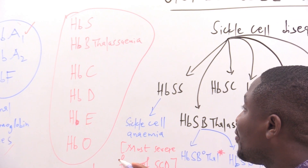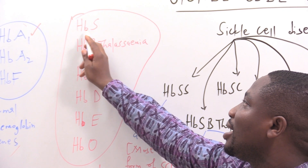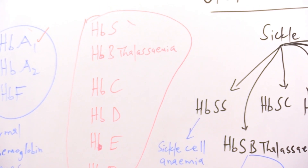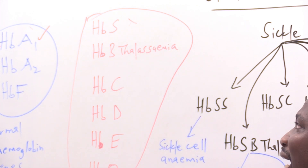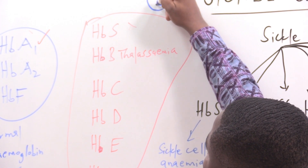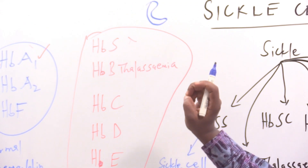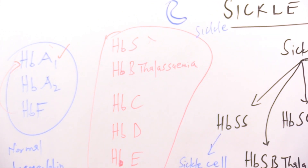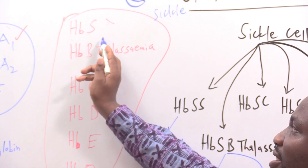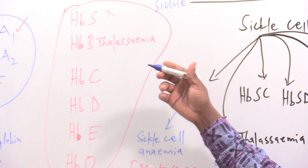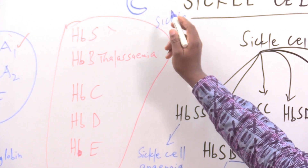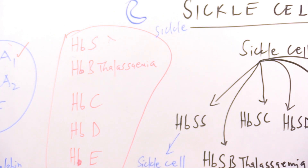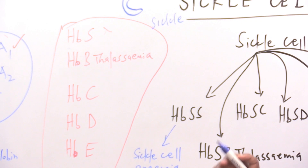For abnormal hemoglobin, we have the HbS gene, which codes for an abnormal hemoglobin. When HbS codes the hemoglobin, it causes the hemoglobin to assume a C-shape — a C-shaped structure looking like an instrument used in the harvesting of rice. We call it the sickle. The disease that results from accumulation of these abnormal genes, the HbS, we call it sickle cell disease because of the C-shaped hemoglobin.